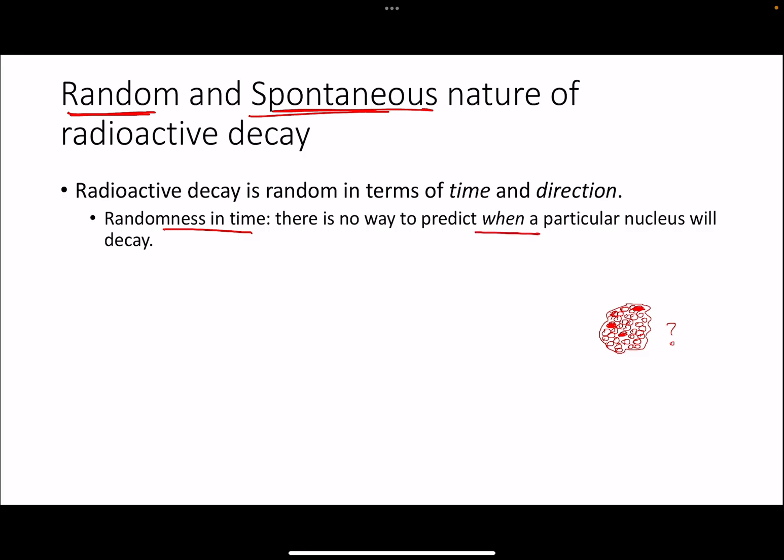Now we also say that radioactivity is random in direction. So what does that mean? Well, if alpha radiations are coming out of the nucleus, one of the alpha particles gets emitted in this direction, one in this direction, one in this direction. Is there any way to predict where the next alpha particle is going to go?